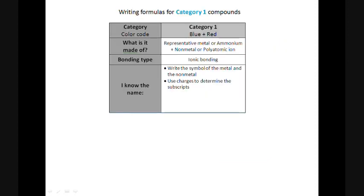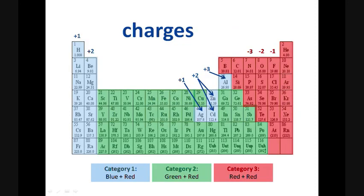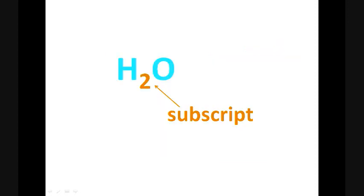Writing chemical formulas for Category 1 compounds is a two-step process. First, we write the symbol for each element just like they are found on the periodic table. And then second, we need to use those charges to determine what the subscripts for each element will be. Quick reminder, charges come from the periodic table. Subscripts are those little numbers after each element in the chemical formulas. Charges, subscripts. Get the picture?